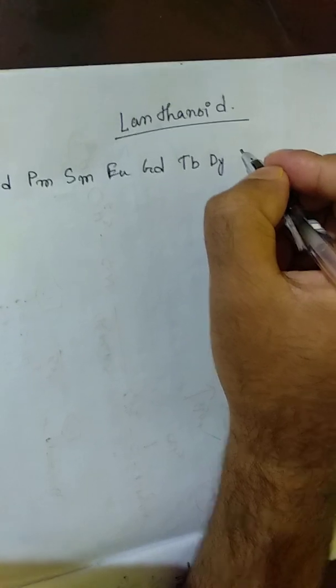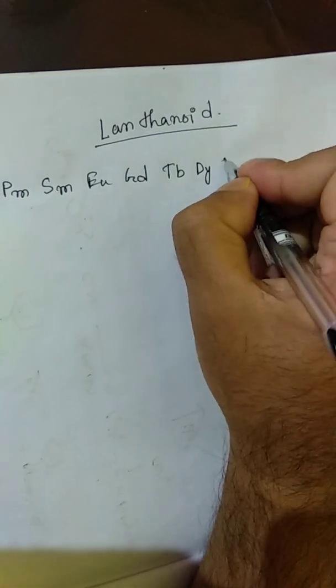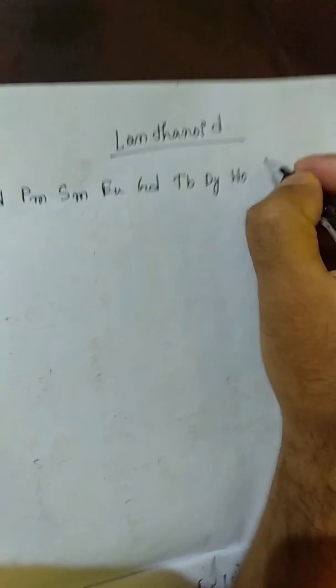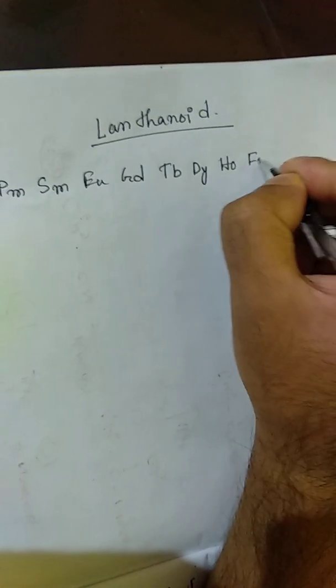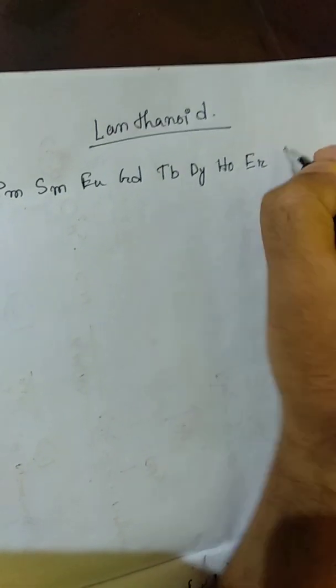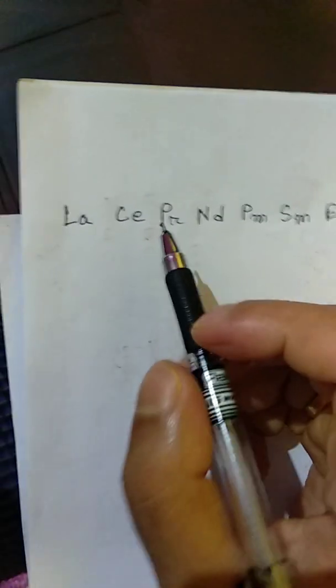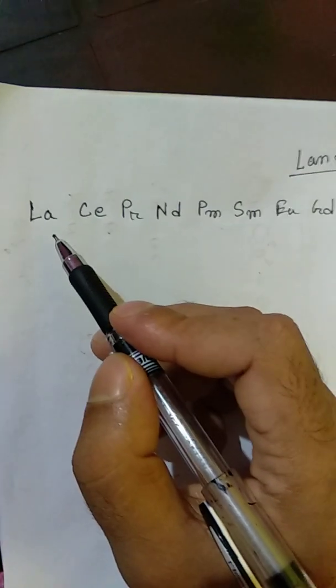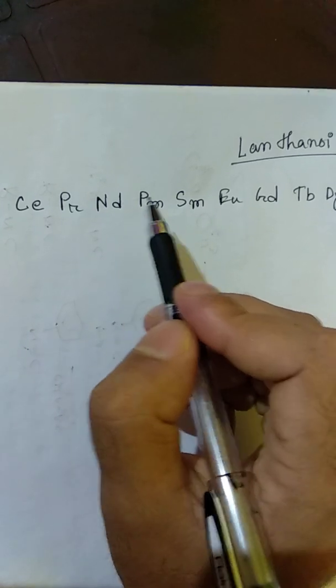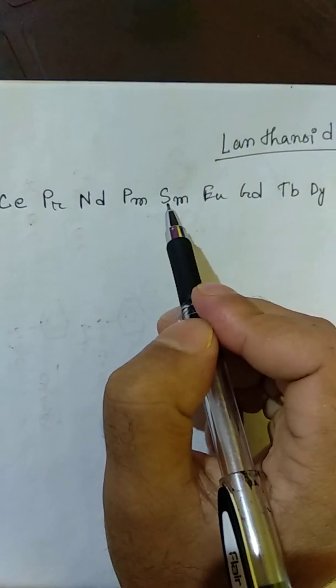Continuing: Europium (Eu), Gadolinium (Gd), Terbium (Tb), Dysprosium (Dy), Holmium (Ho), Erbium (Er), Thulium (Tm), Ytterbium (Yb), Lutetium (Lu). The first element of the lanthanoid series is lanthanum. Write down the symbol.